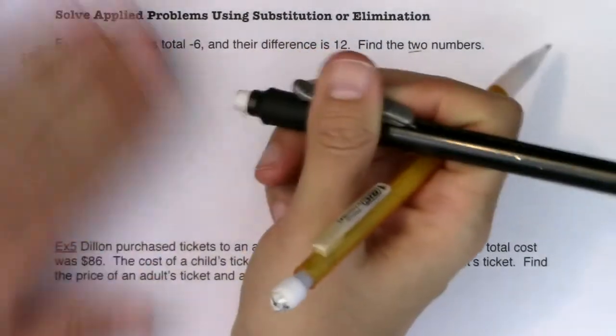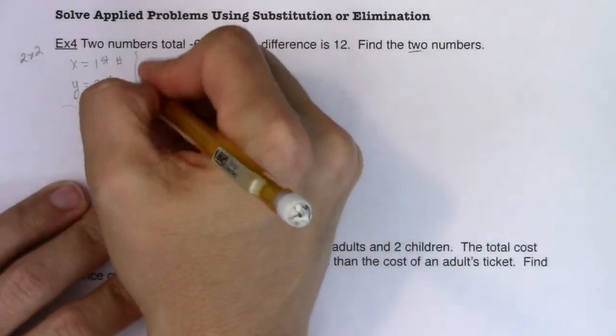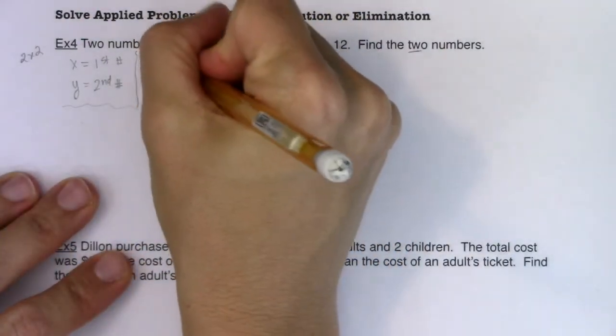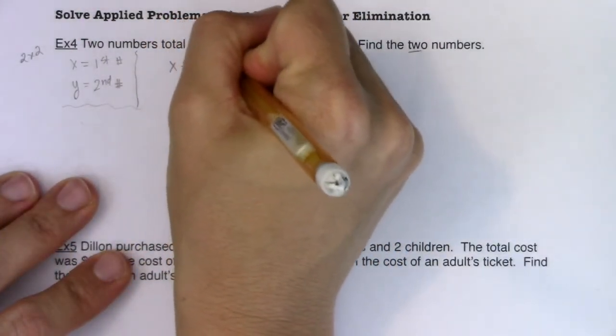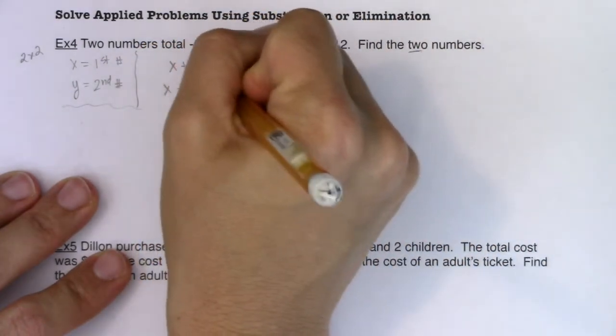Let me section that off. We've got that two numbers total negative six, but their difference is positive 12.